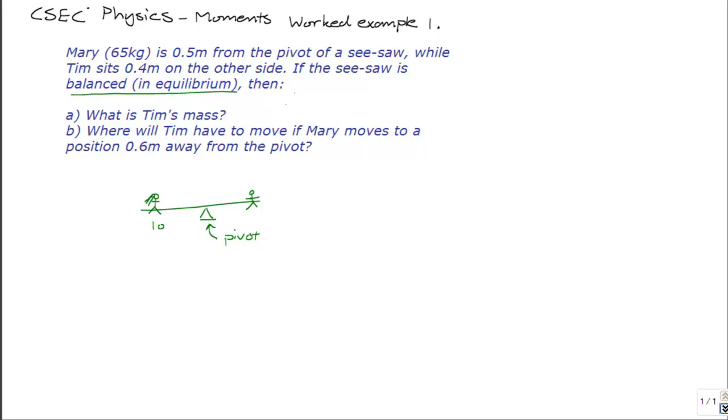Mary is at a distance of 0.5 meters from the pivot. Tim is at a distance of 0.4 meters. Both of them, Mary and Tim, have mass, M1 and M2, and both are experiencing the acceleration due to gravity, G.